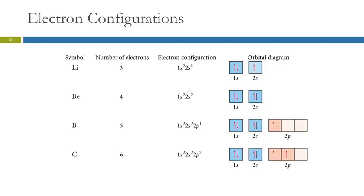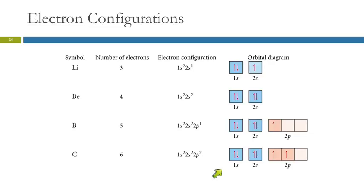Here are orbital diagrams for lithium through neon. Each sublevel is separated by a space and labeled. The 1s and 2s each have one box; the 2p sublevel has three boxes for three orbitals. We fill from the lowest energy first — electrons pair up when forced to, but otherwise fill with parallel spins. These correspond to their written electron configurations.